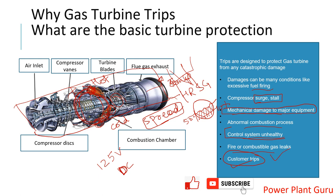Another example of a customer trip: if you are running a gas turbine supplying power to a process plant and that process plant trips, there is no requirement for power and you need to evacuate it — in that condition a customer trip also occurs. The key message is: whenever you are operating a machine or doing an investigation, think about why it has tripped and what protections are in place. If your machine is moving toward an unhealthy situation and not tripping, you need to take action and trip it manually to save it.